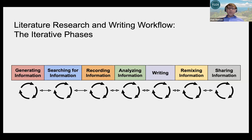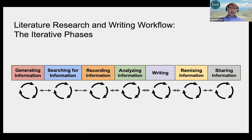The seven phases are: generating information, searching for information, recording information, analyzing information, writing up that information, remixing information, and sharing the information. Each phase can be conceived as having three different dimensions. The first is the traditional approach — old school methods for generating, analyzing, or whatever the phase. The second is modern approaches, usually the information age approach with the advent of the internet and advanced technologies. And finally, innovative approaches, which often include generative AI tools.